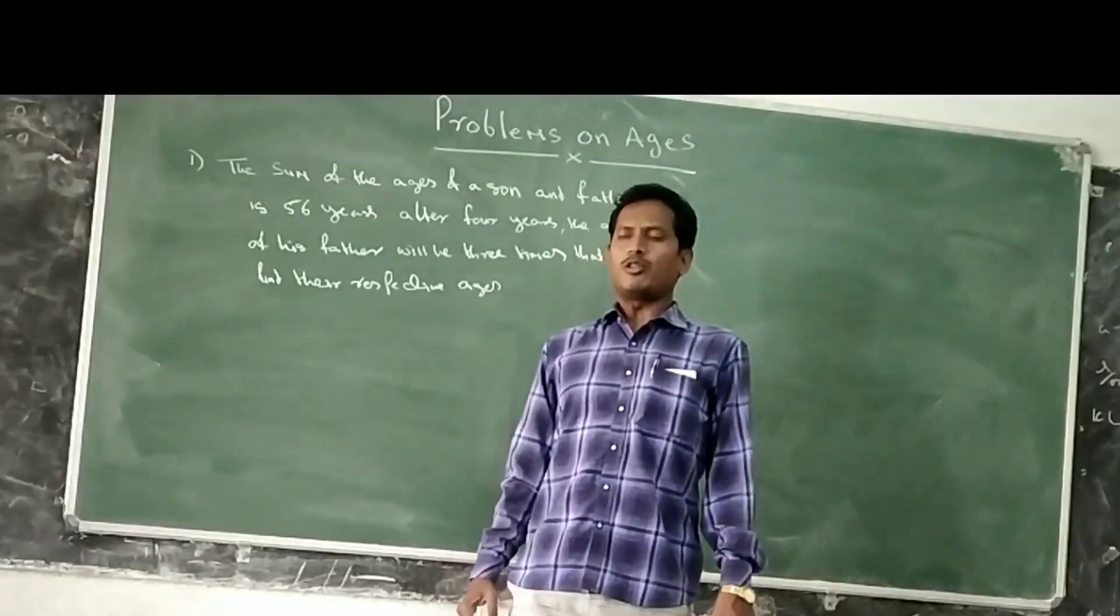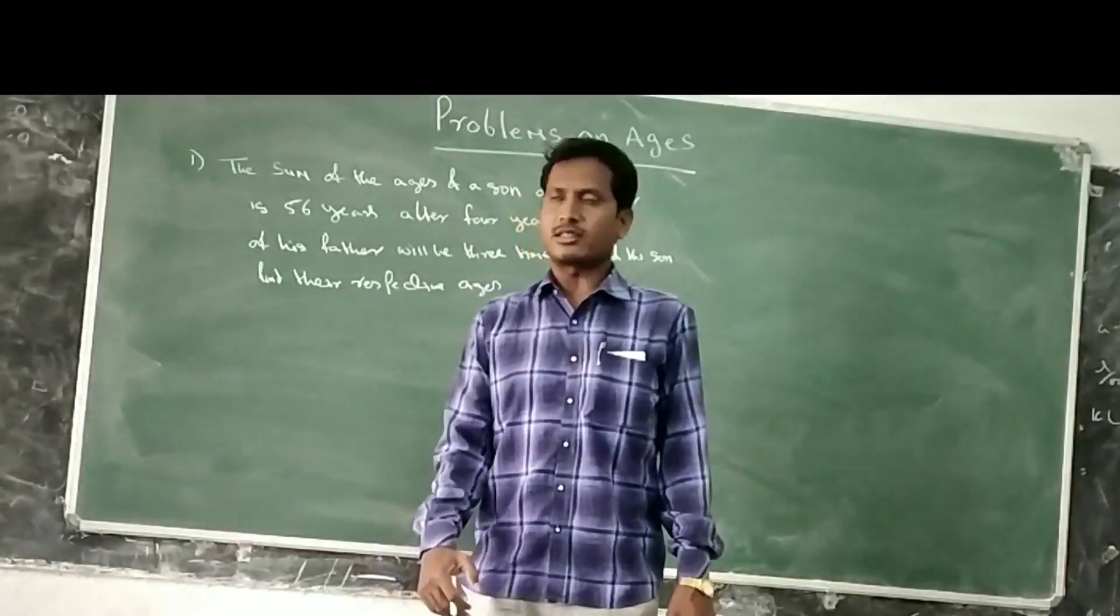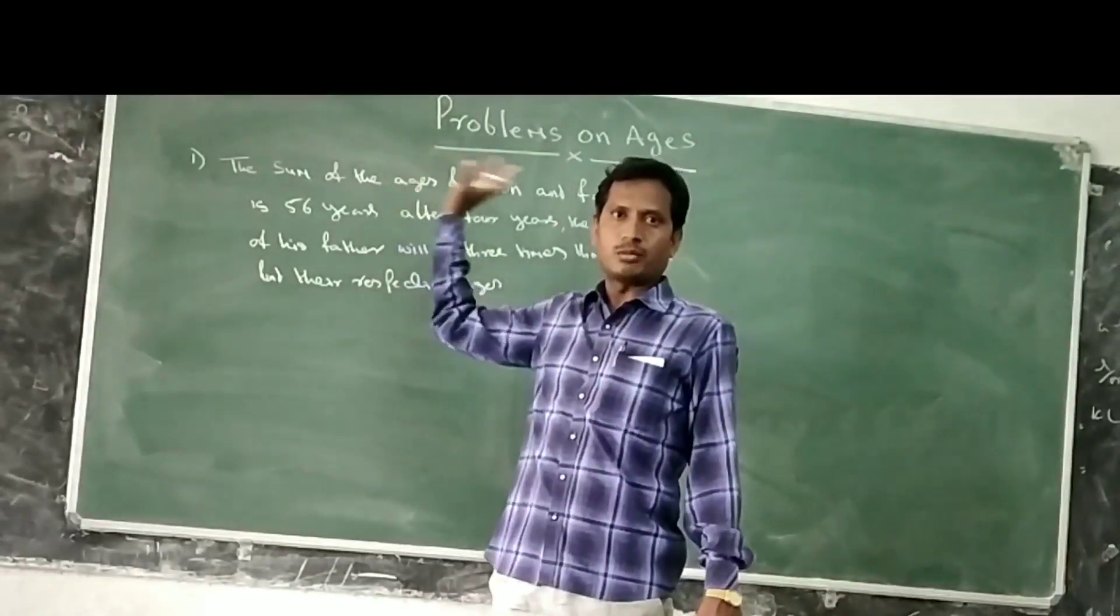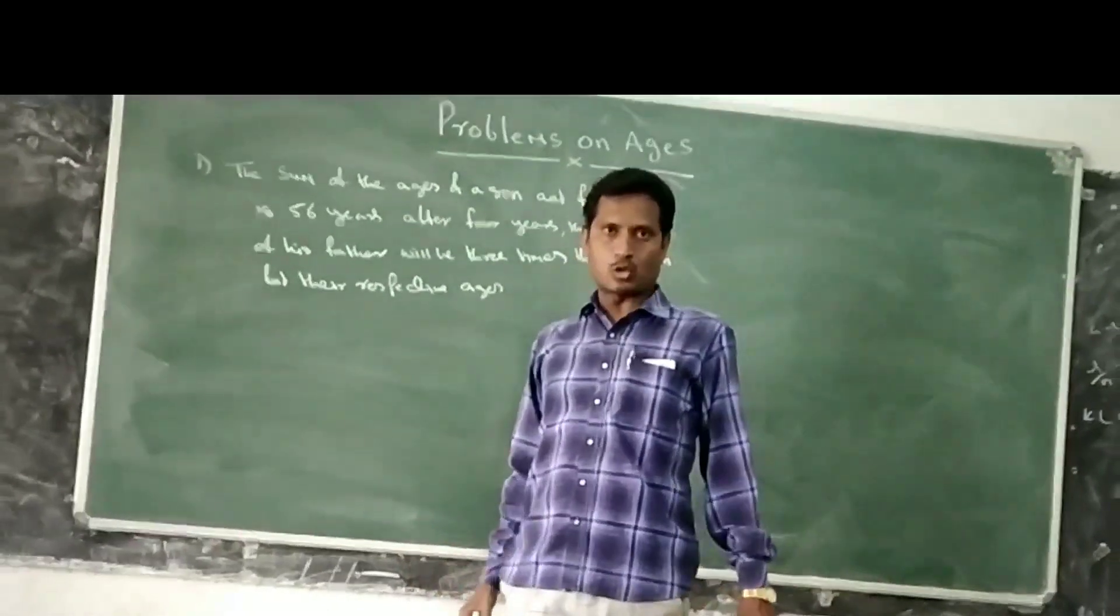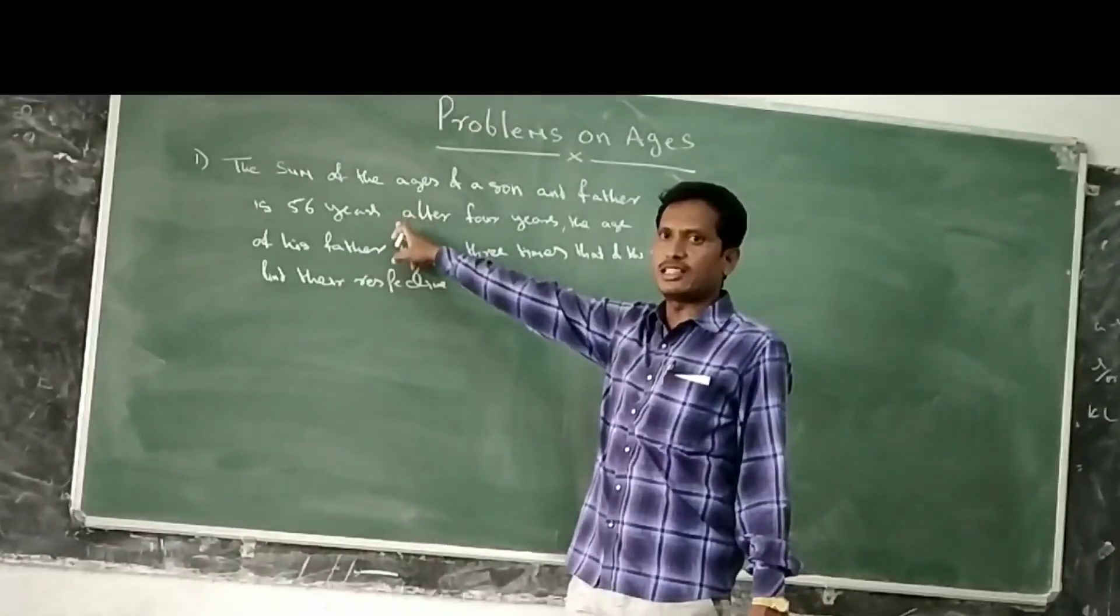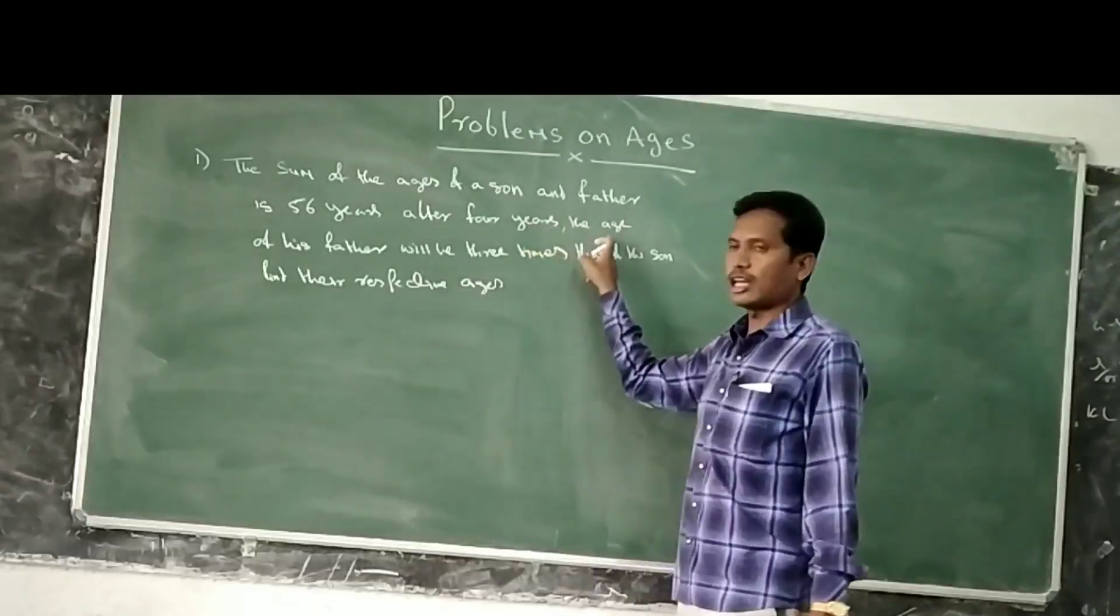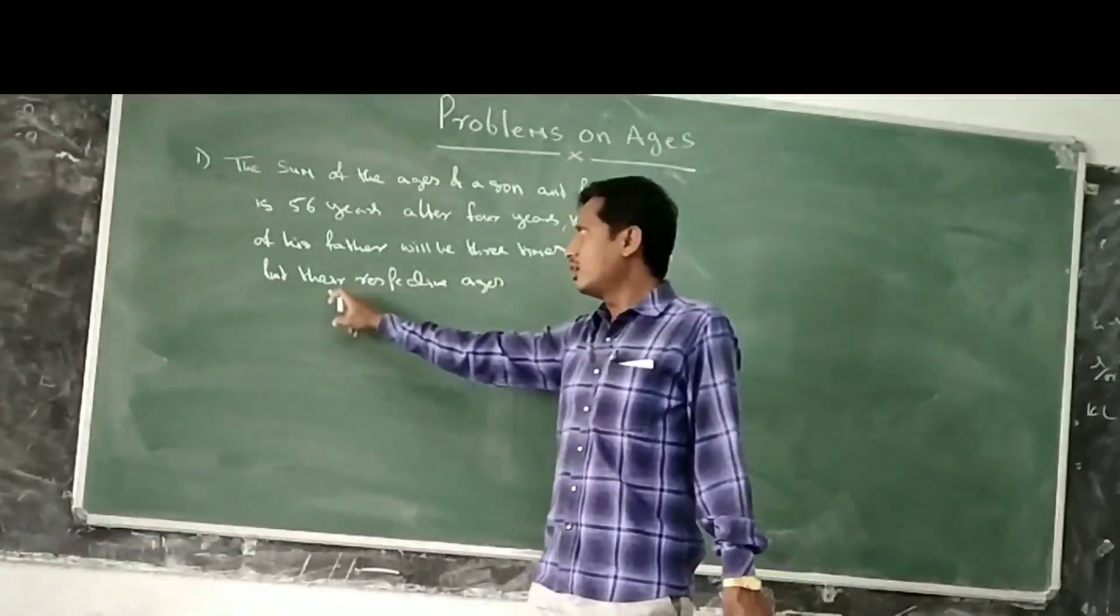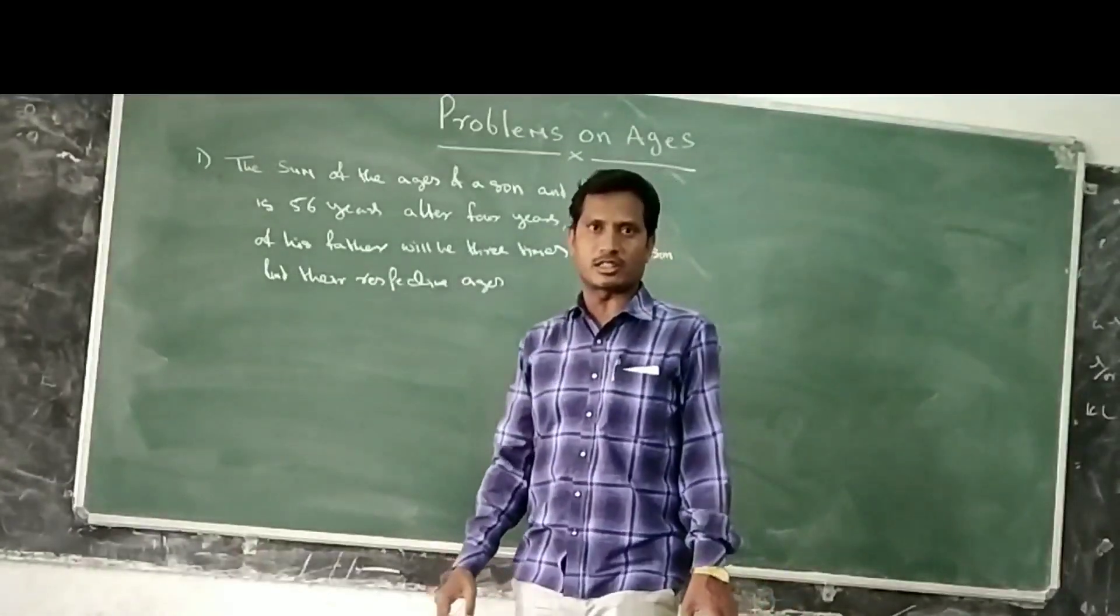Now we start from the topic: problems on ages. Let us see the first question. The sum of the ages of his son and father is 56 years. After 4 years the age of his father will be 3 times that of the son.